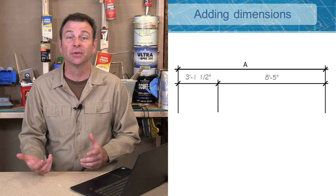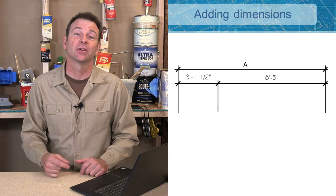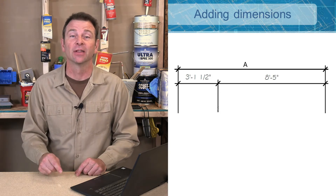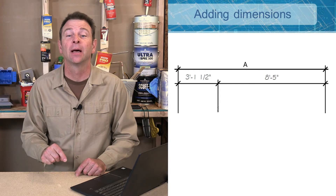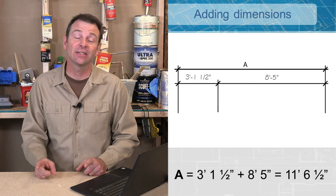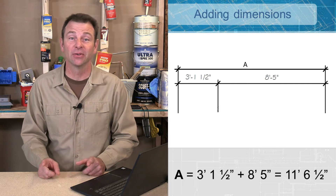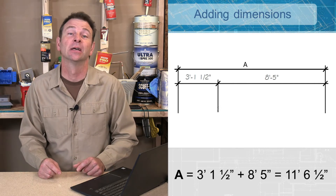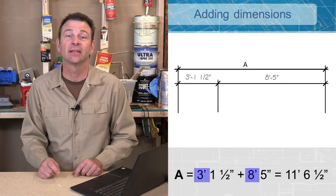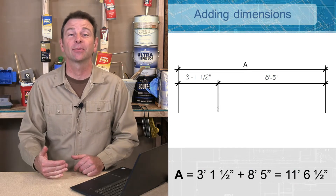We need to know what the total is. Dimension A would be a combination of three foot one and a half inches plus eight foot five inches. To add these two together you can actually do this in your head — you might also be using a construction calculator. I would add the feet together: eight feet added to three feet is eleven feet.